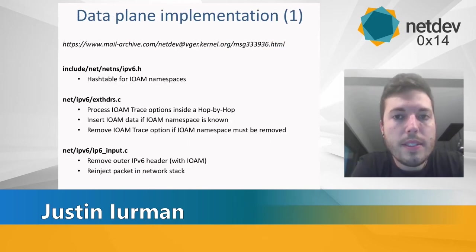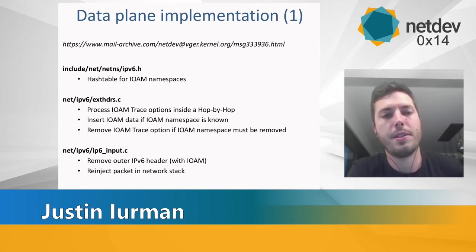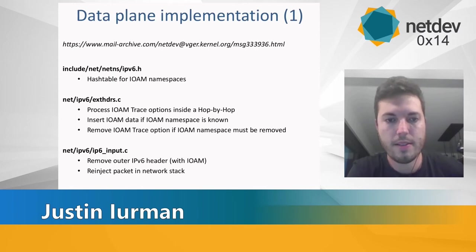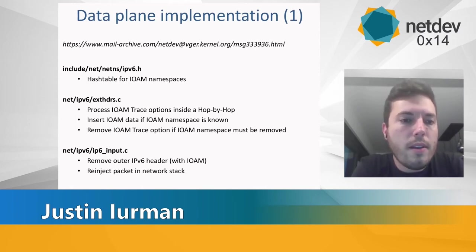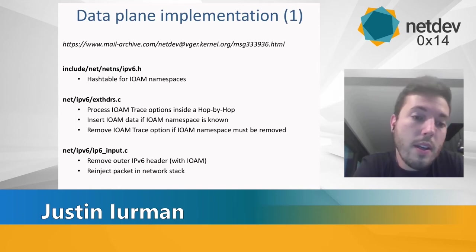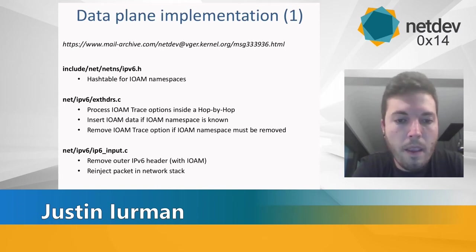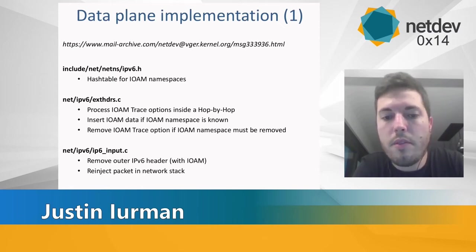Now let's go to the implementation. The link at the top of the slide is the thread for the patch I submitted — this is the first version — and there are interesting discussions with Tom Herbert. The patch includes a new hash table for IOAM namespaces. In the extension headers, I implemented the processing of IOAM pre-allocated trace options inside the hop-by-hop header, the insertion of IOAM data when the IOAM namespace is known (configured through generic Netlink, with ip-route2 as the user tool), and a new feature to remove an IOAM option, which is simply removing a TLV from an extension header.